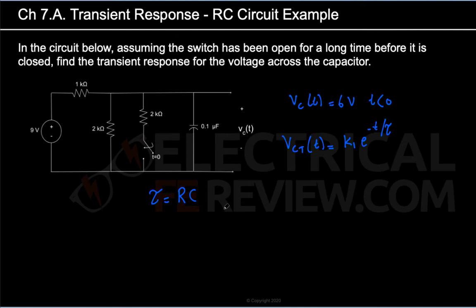The time constant τ tells us how quickly the capacitor charges or discharges — it takes five time constants for the capacitor to fully charge or discharge. The next value we need is k1, which is a constant equal to the steady-state value of our signal minus the value of the signal at time equals zero.